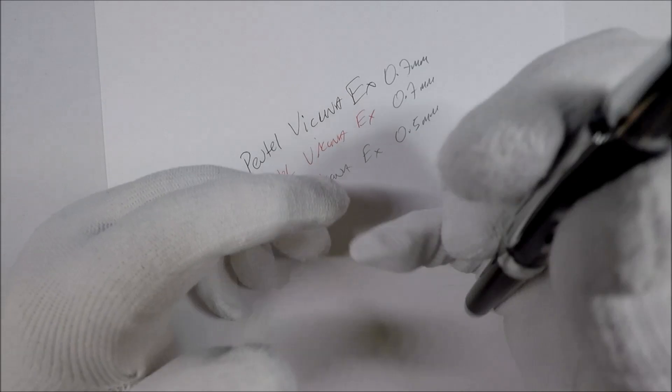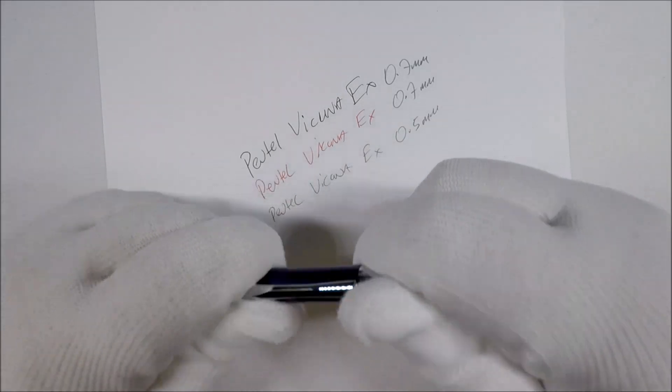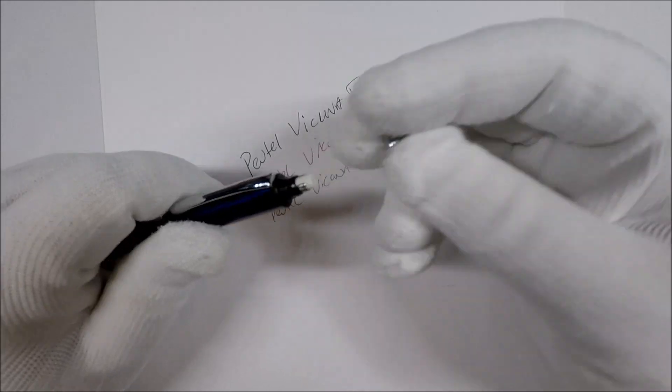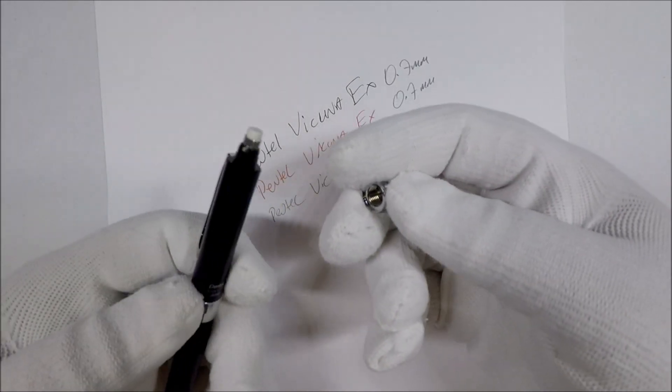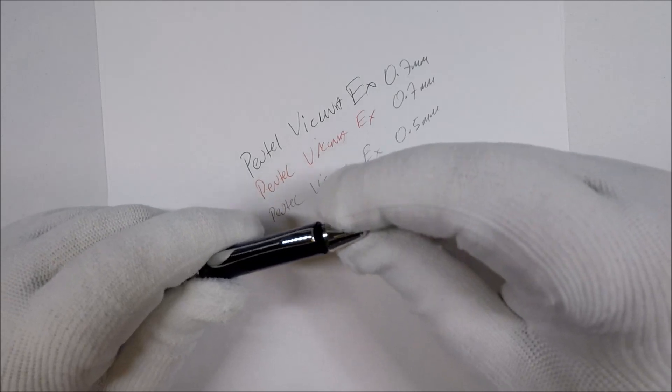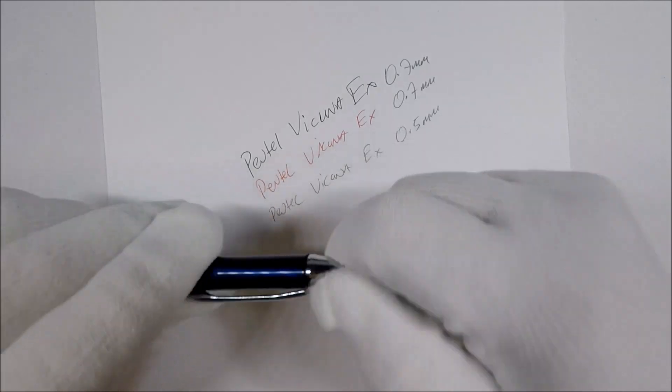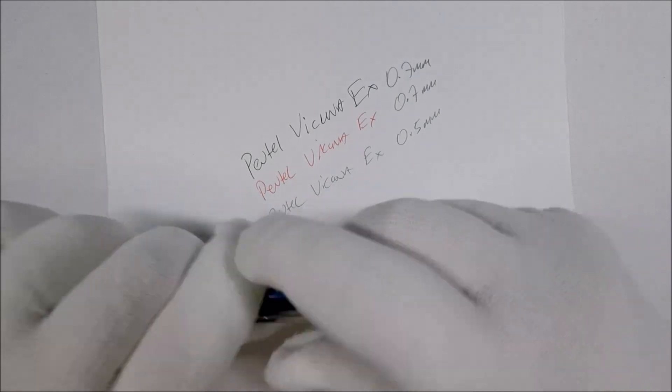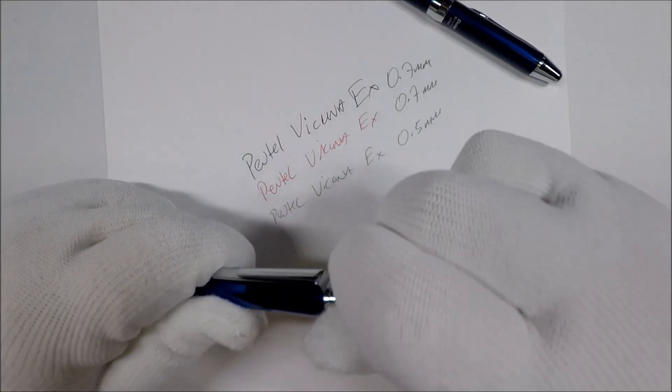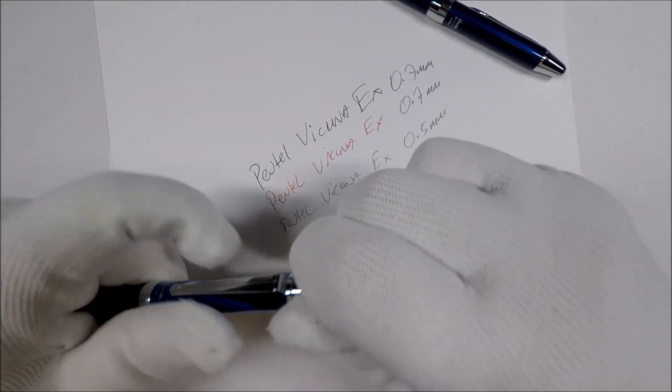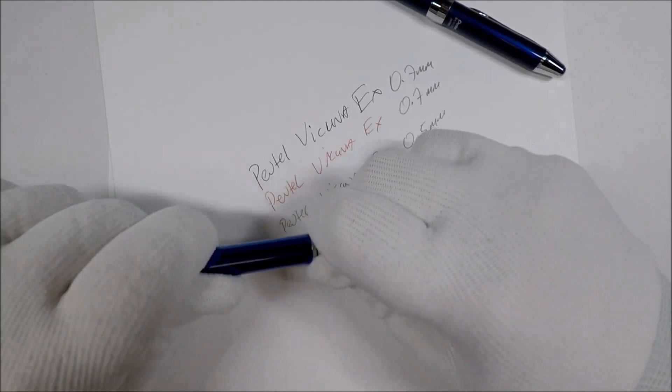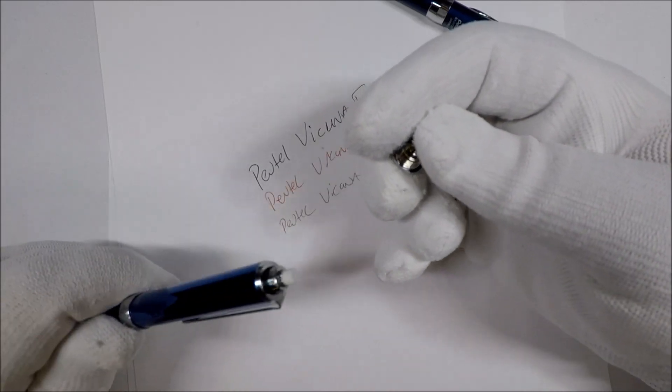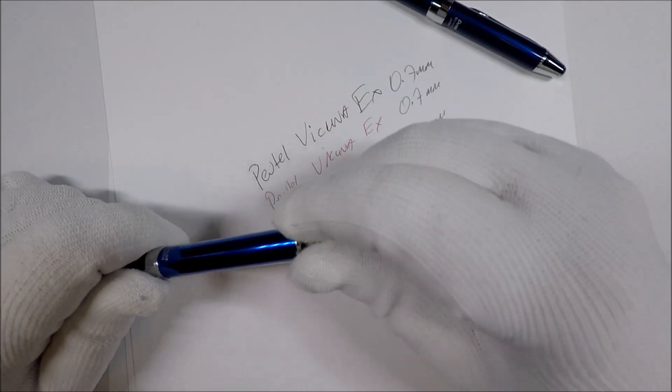I'll tell you what they both do that I am a fan of. They have substantial eraser covers, because this is a serious eraser cover. It doesn't feel like that cheap, super thin aluminum. And the E-Volt has the same thing.